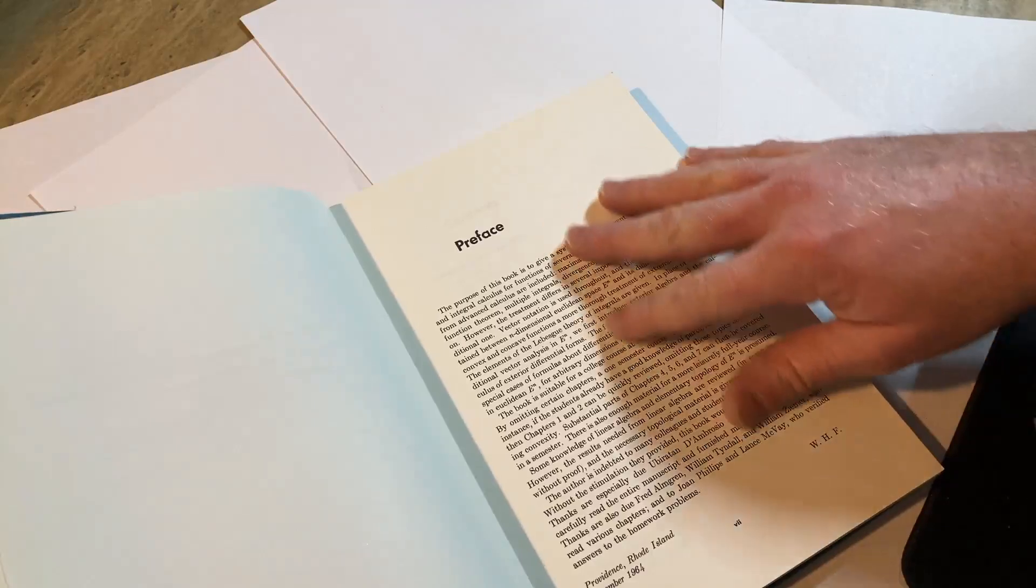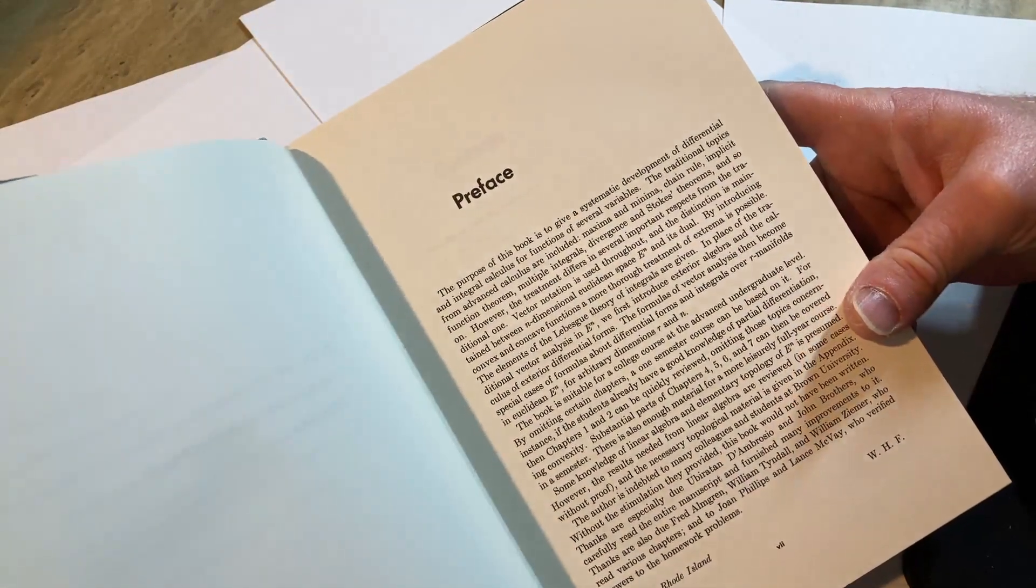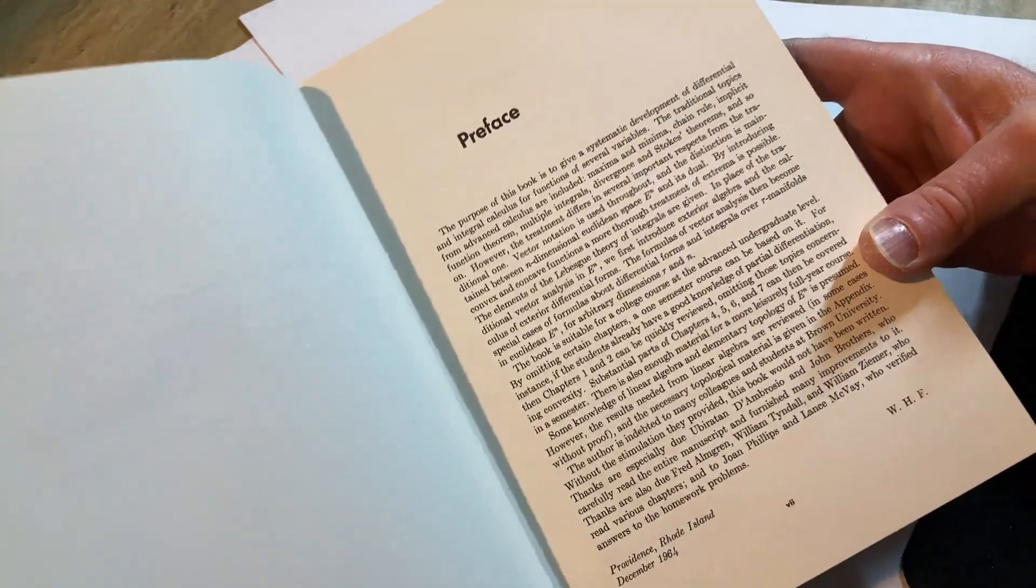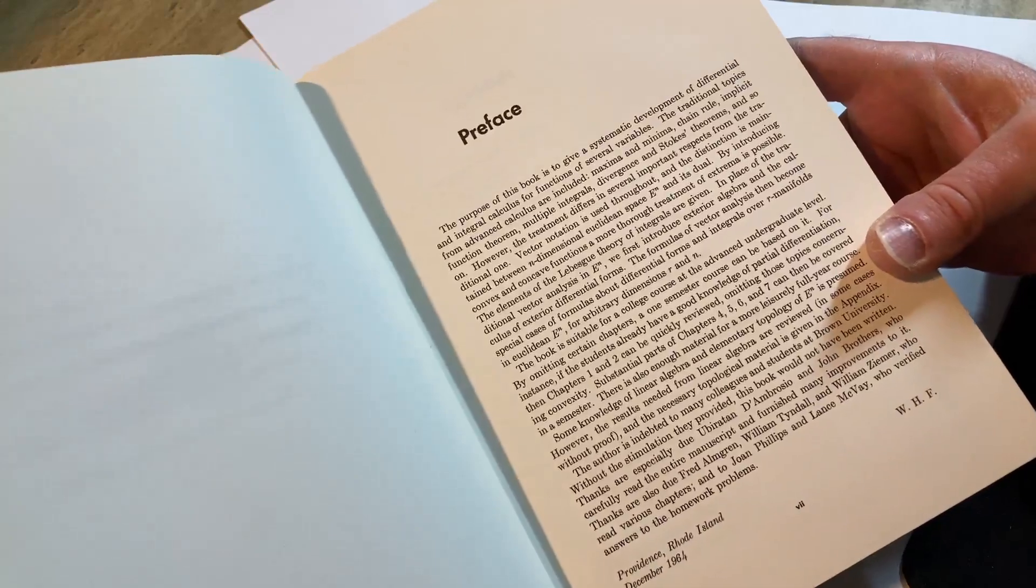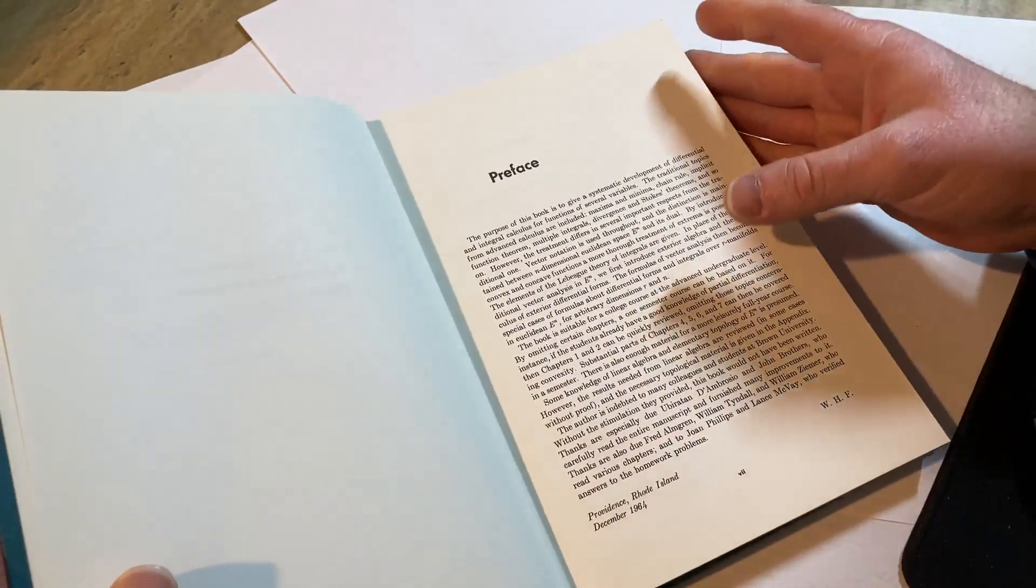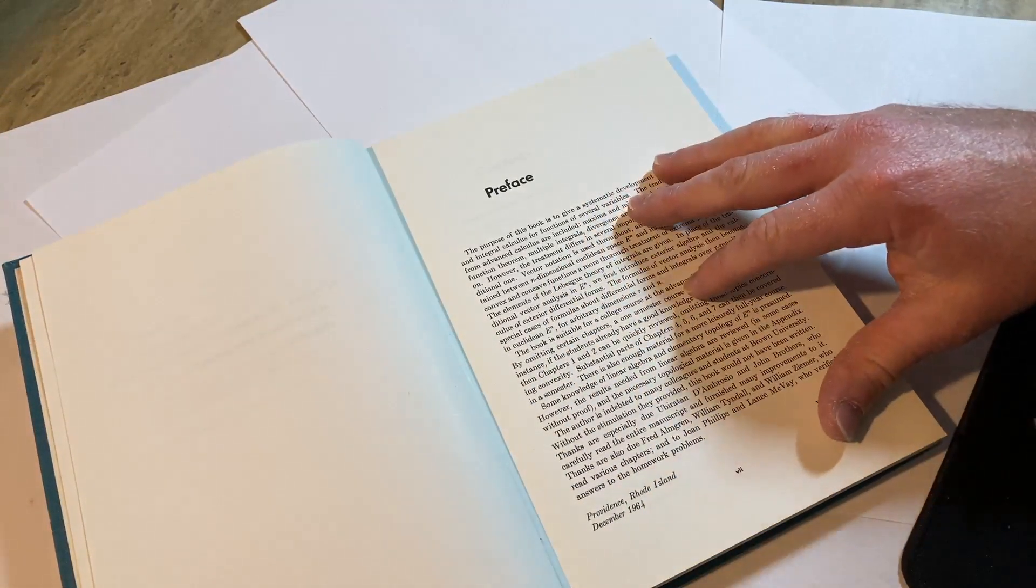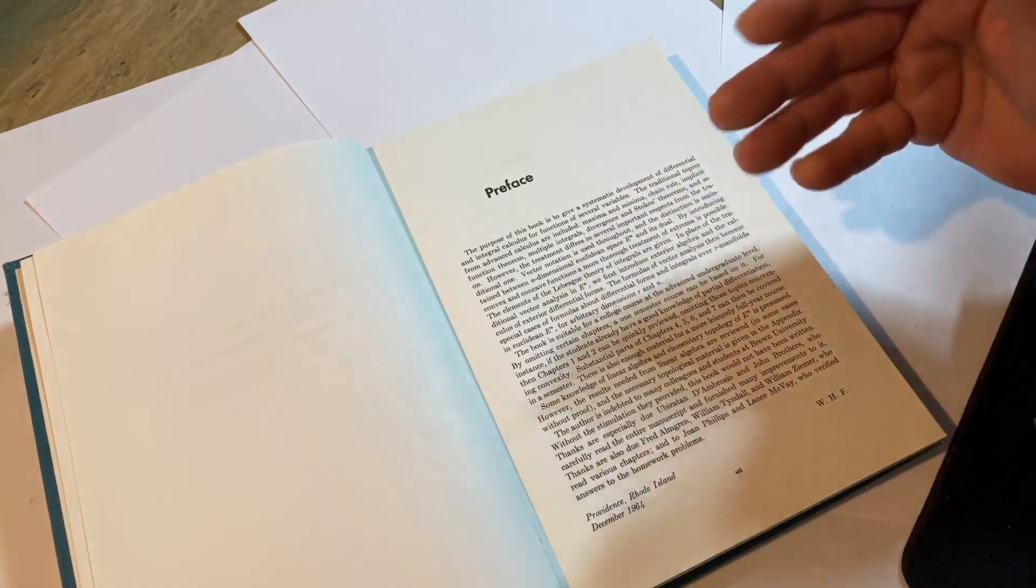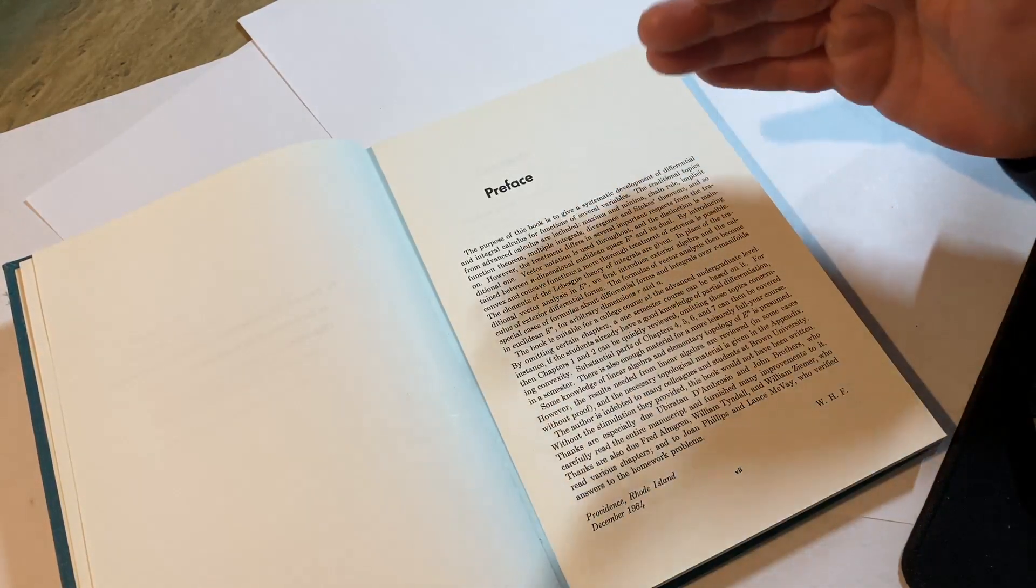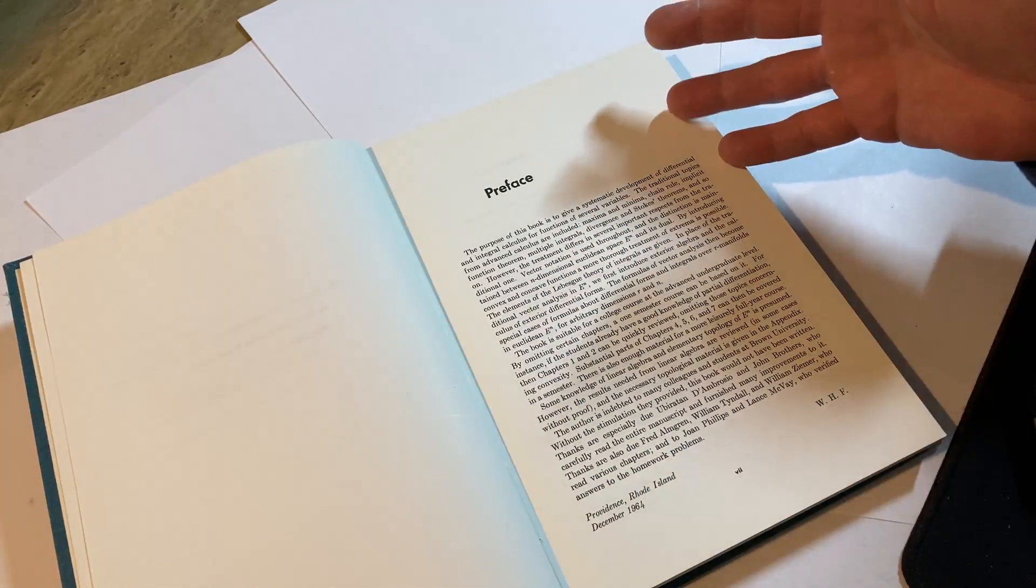Here's the preface. The preface talks about who the book is for and what you need to know in order to read this book. Basically, in order to read this book, in my opinion, you should know some calculus: Calc 1, Calc 2, Calc 3, and you should know how to write proofs. This book is intended to be used for a one-semester course at the undergraduate level for math majors, like your fourth year as a math major in the US.